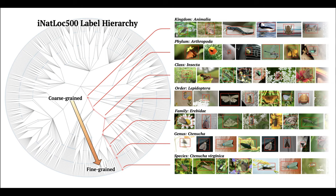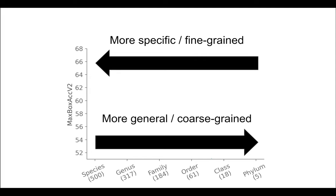INATLOC 500 covers 500 diverse categories with a consistent hierarchical label space. Using INATLOC 500, we can study localization performance as a function of label granularity.